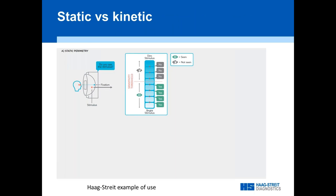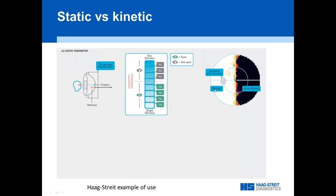Static versus kinetic — just as a review. Static perimetry is what we know best because that's the state of the art, especially for glaucoma, where at a fixed location we show stimuli of different brightness and ask a patient to press a button if they see it. We define a threshold, and that gives us a grayscale view — here showing a typical hemianopia.